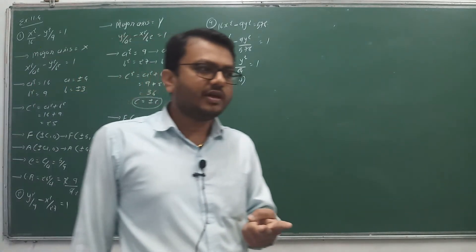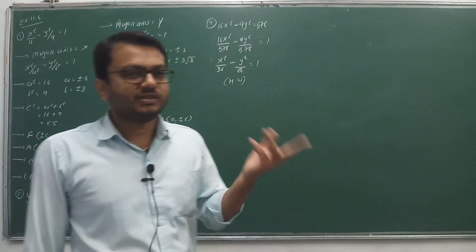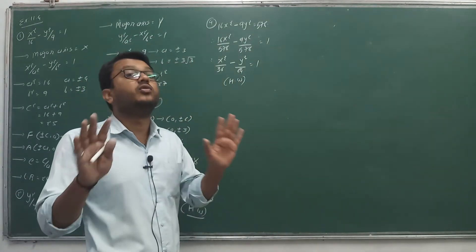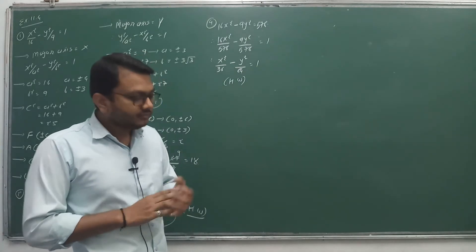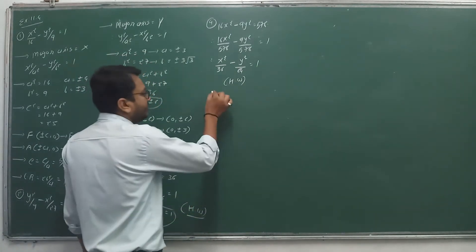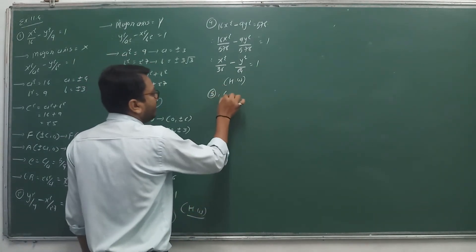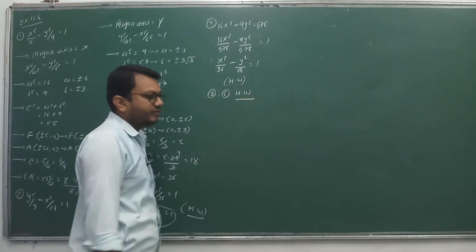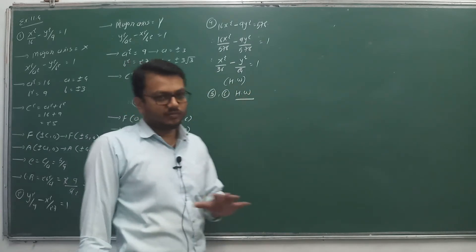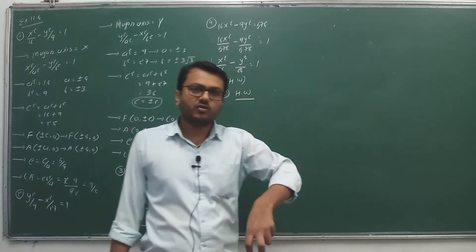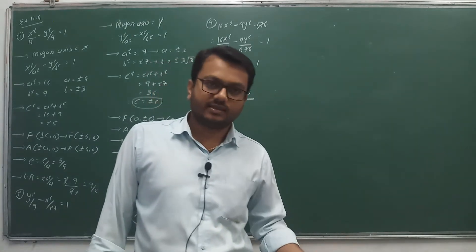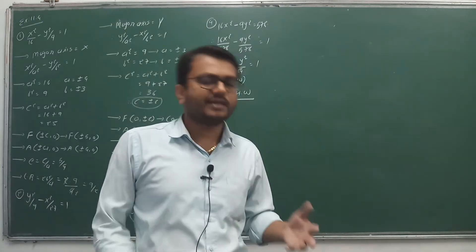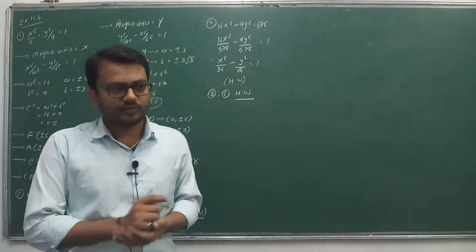All 6 sums follow the same pattern, because we only have 2 options. Out of 6, 3 are of the first pattern and 3 of the second pattern. Numbers 5 and 6 are also homework. The pattern from question 1 is complete — given the equation, find the foci, vertices, eccentricity, latus rectum, etc.